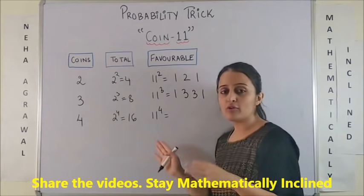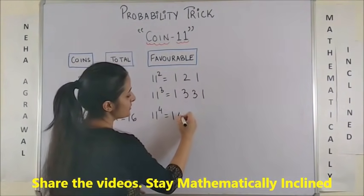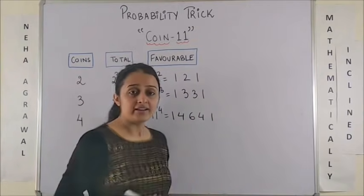And likewise, when there are 4 coins, then we say the outcomes or the favourable outcomes would follow 1, 4, 6, 4, 1.